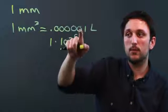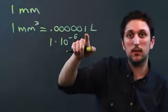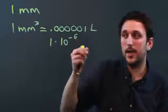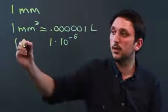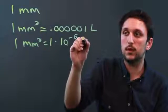We only have five zeros, but wherever the last digit is, we count from there, and that's how many exponents we have. So one millimeter cubed equals 1 times 10 to the negative 6 liter.